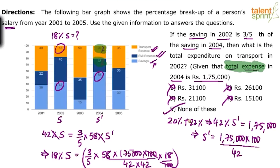The key here was to understand the question properly. It is the total expense for the year 2004, which comes out to be only 42% and not 100%. Option 5, none of these, is the final answer. I'll leave the exact calculation to you. Let's move to the next question.